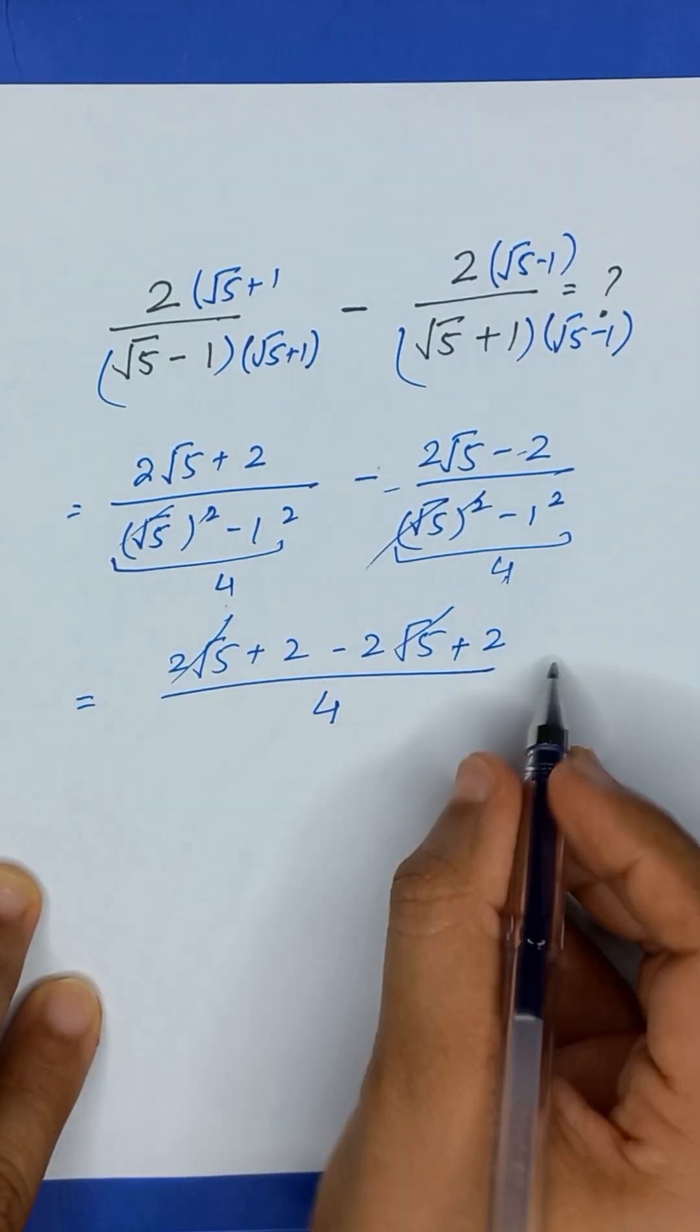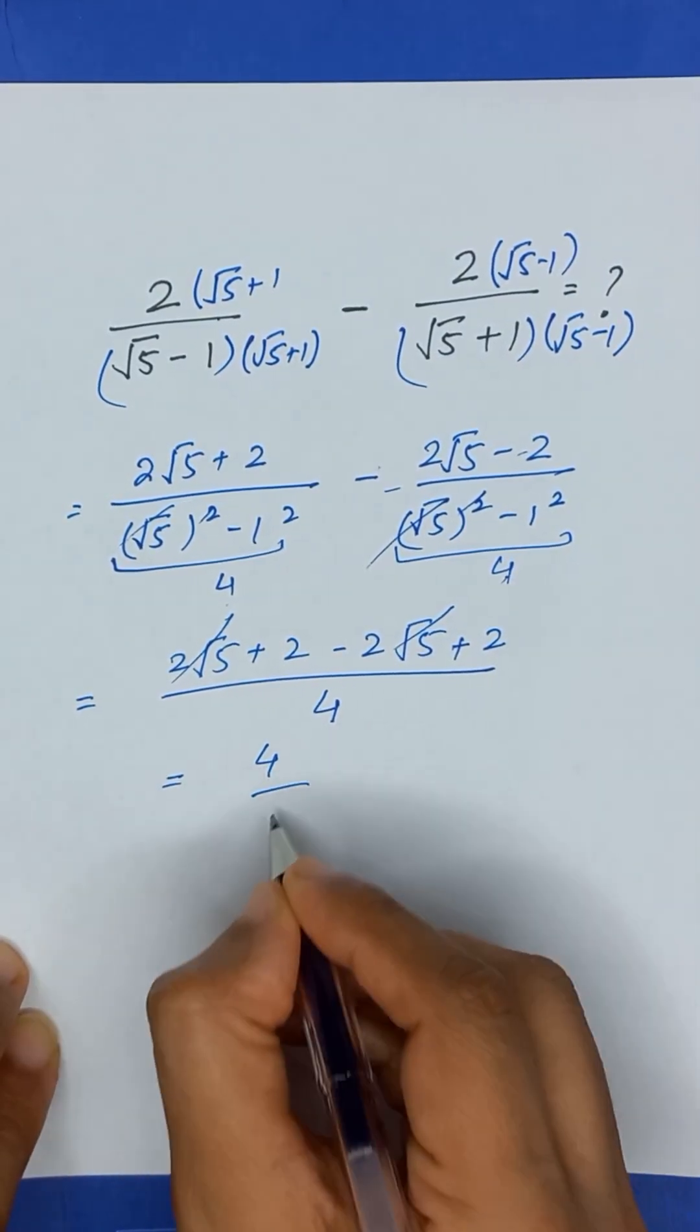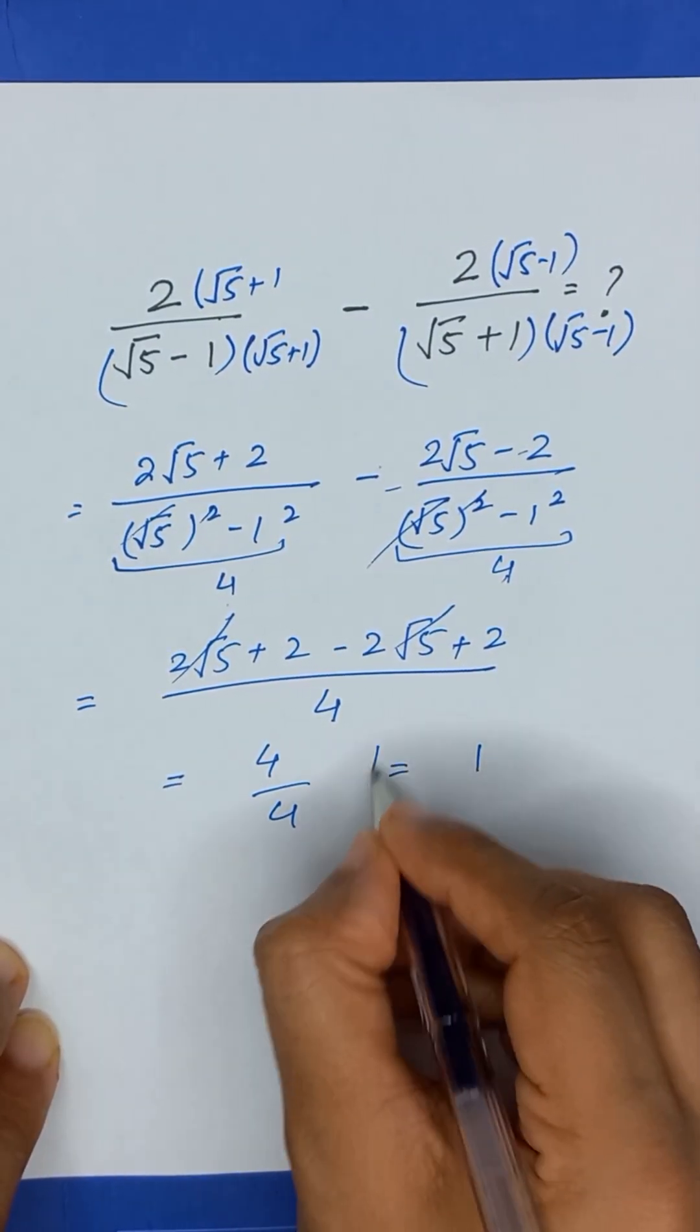This and this will be cancelled out, and it will be equal to 4 divided by 4, which will be equal to 1. Thanks for watching.